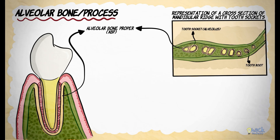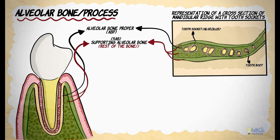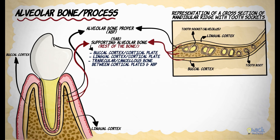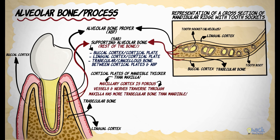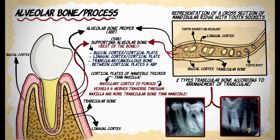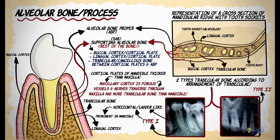The rest of the alveolar process gives support to the alveolar bone proper and is called the supporting alveolar bone. It consists of buccal and lingual cortical plates with trabecular or cancellous bone in between the cortical plates as well as the alveolar bone proper. The cortical plates of the mandible are thicker than those of the maxilla, since the maxillary cortex has numerous pores where blood vessels and nerves traverse. The maxilla also has more trabecular bone than the mandible. Trabecular bone in the alveolar process is divided into two types: type 1, which has a horizontal or ladder-like arrangement and is more prominent in the mandible, and type 2, which is irregularly arranged and more common in the maxilla.